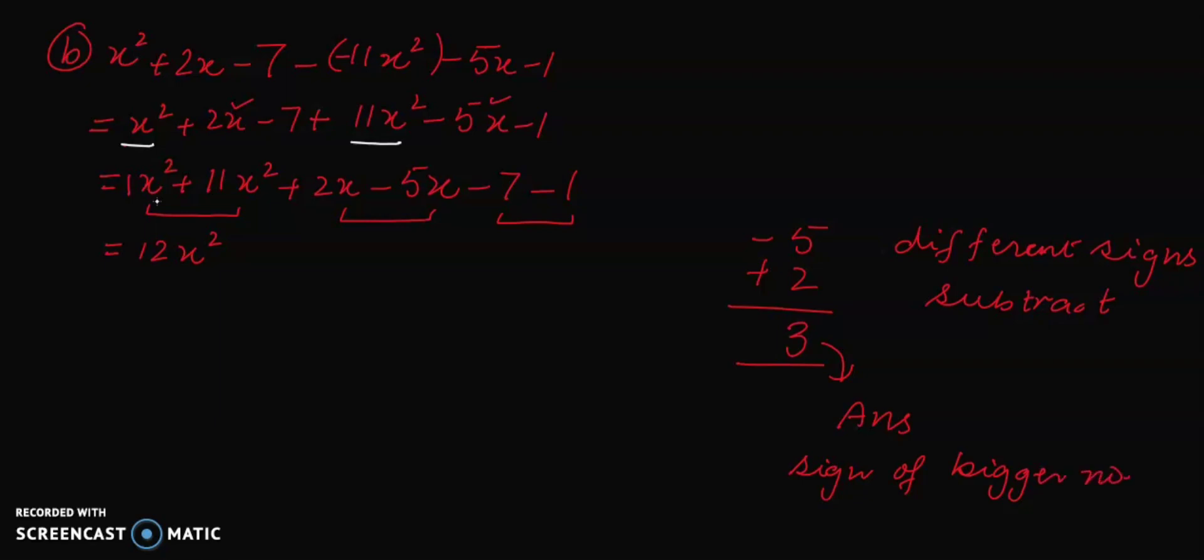So we get minus 3 as the answer. So we can write here minus 3x. Now here you can see that this is minus 7 minus 1. So you should remember that when there are same signs, we have to add the numbers. 7 plus 1 is...